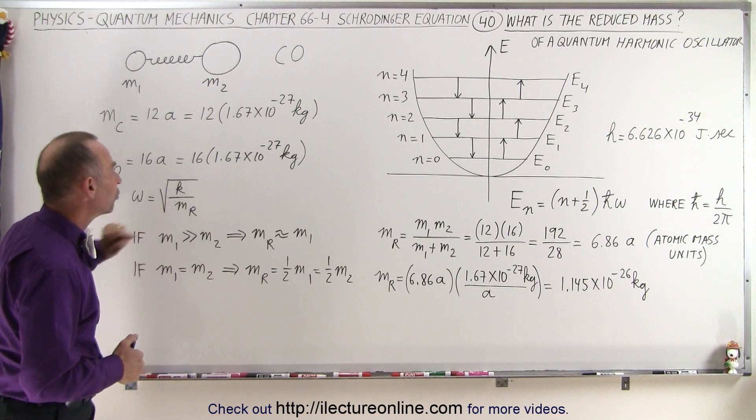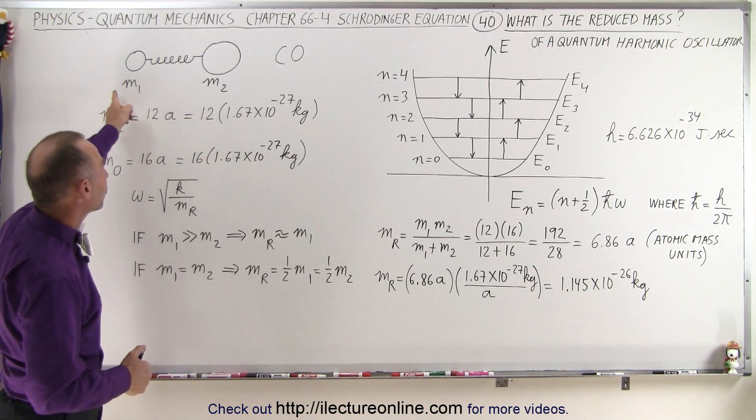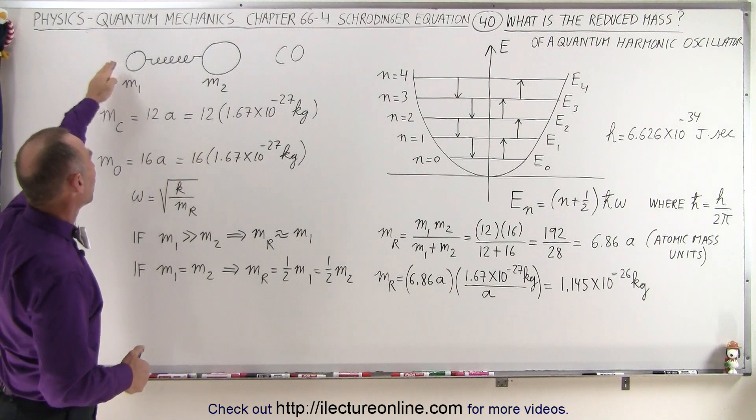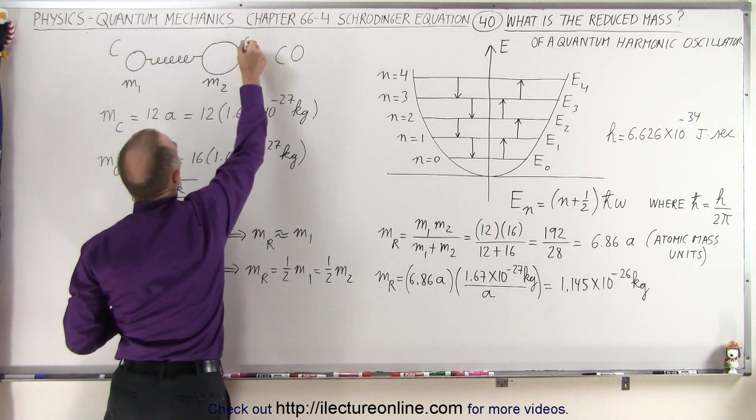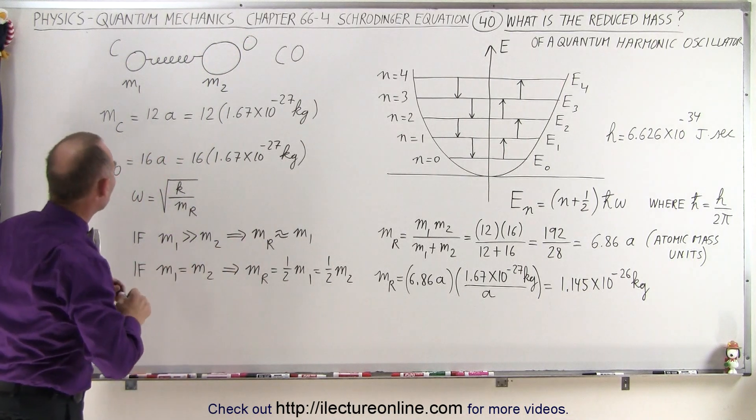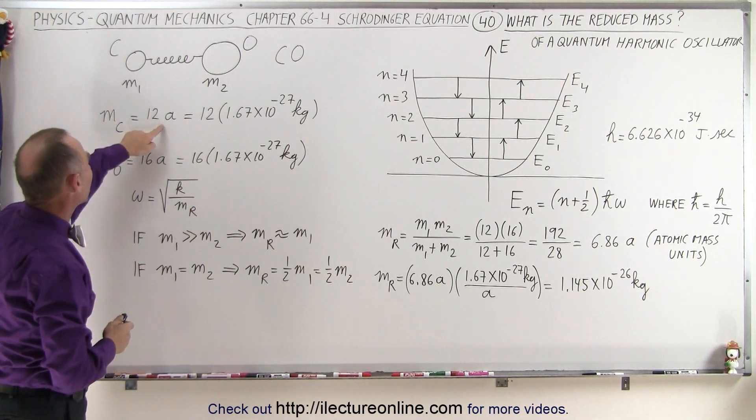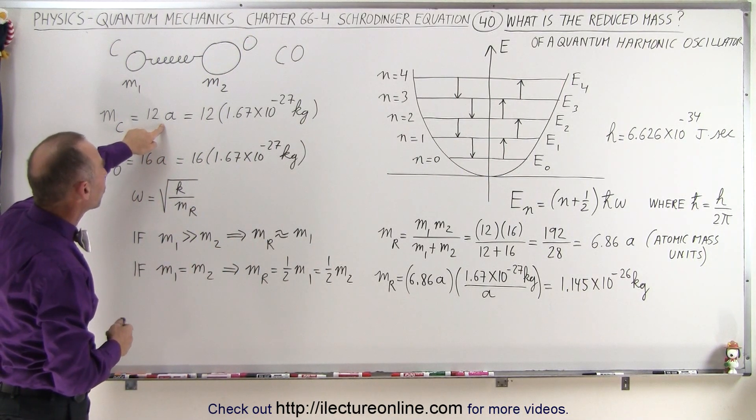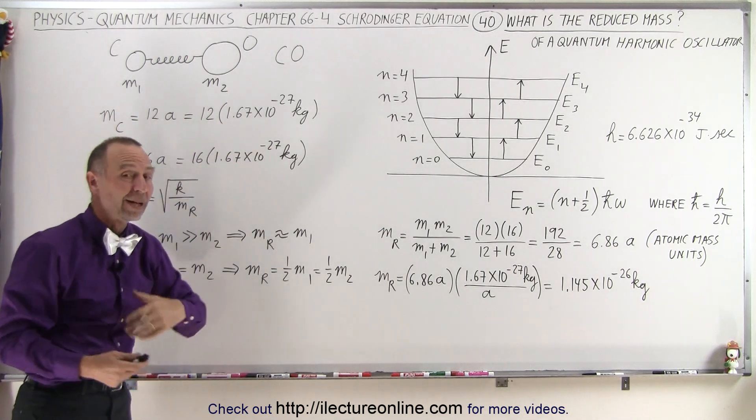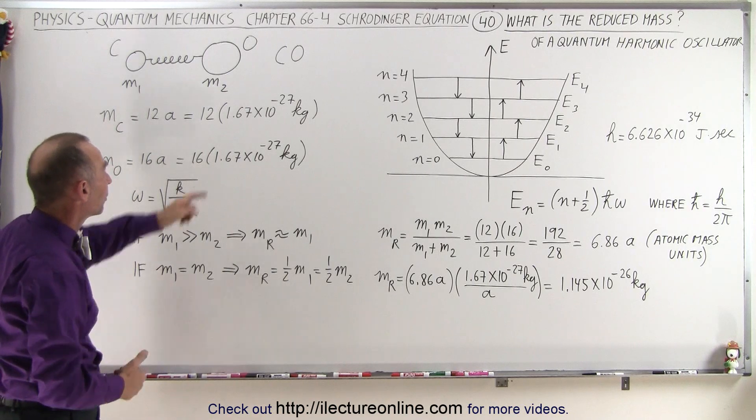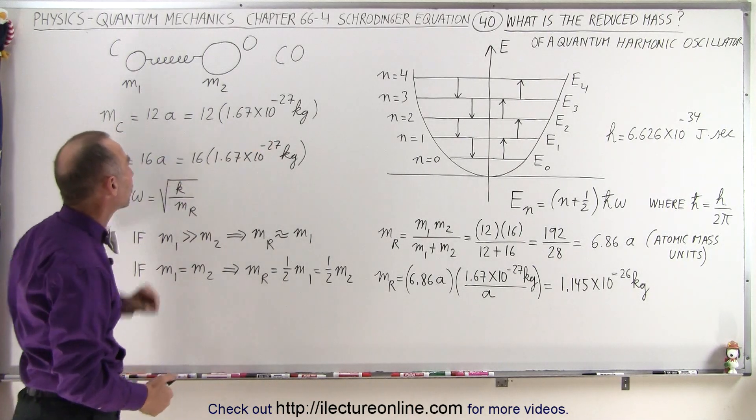But now we want to talk about the reduced mass. So in a case like this, where we have a diatomic molecule, where one atom is carbon and the other atom is oxygen, we realize that the carbon atom has a mass of 12 atomic mass units, which in kilograms would be 12 times 1.67 times 10 to the minus 27 kilograms, because that is the mass of an atomic mass unit.